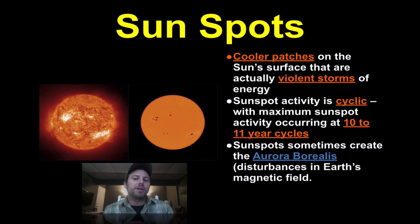Sunspots, you occasionally hear this term, are nothing more than cooler patches on the sun's surface where there's violent storms of energy getting poured out. Sunspot activity is cyclic, occurring with the maximum sunspot activity occurring at 10 to 12, 11-year cycles. So from maxima to maxima. Sometimes these sunspots also create what's known as the aurora borealis or disturbances in Earth's magnetic field. We'll talk more about this in class, but I'll show you some images. It's actually pretty neat.